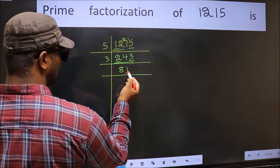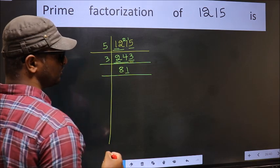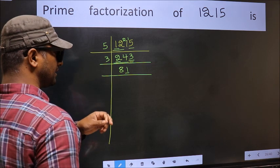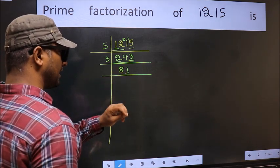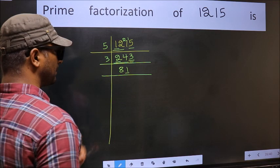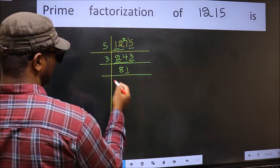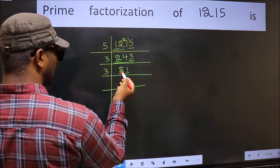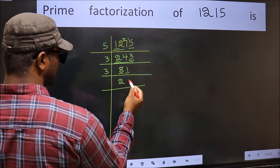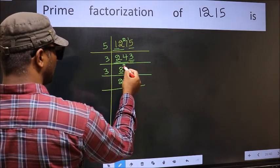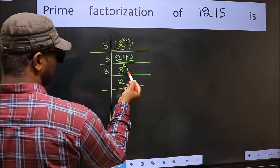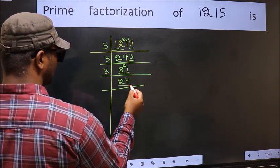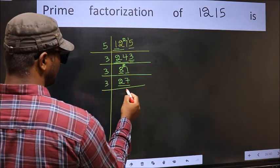Now the last digit is 1, not even, so this is not divisible by 2. To check divisibility by 3, add the digits: 8 plus 1 is 9. 9 is divisible by 3, so this number is also divisible by 3. So take 3 here. First number is 8. A number close to 8 in the 3 table is 3 times 2 is 6. 8 minus 6 is 2, carried forward making 21. When do we get 21 in the 3 table? 3 times 7 is 21. Now here we have 27. 3 times 9 is 27.